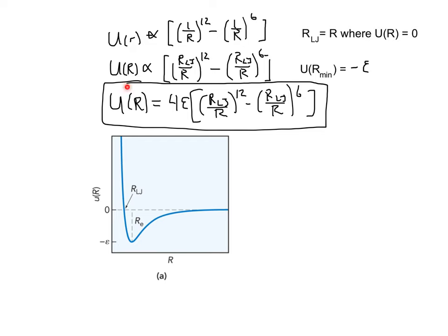If we graph this potential energy function as a function of r, we can see the general features of this function. Notice that the function crosses zero at the Lennard-Jones distance, as we indicated, and that there is a minimum of the curve at minus epsilon, as we required. Notice that at long distances, the potential is equal to zero. At large distances, both the repulsive and the attractive term tend towards zero, making the potential equal to zero. That means that at large distances there are no interactions between particles, and it's only when particles get close enough that they begin to feel the attractive interactions. If they get too close, they begin to feel those repulsive interactions. And so we describe this curve as having an attractive well and a repulsive wall.